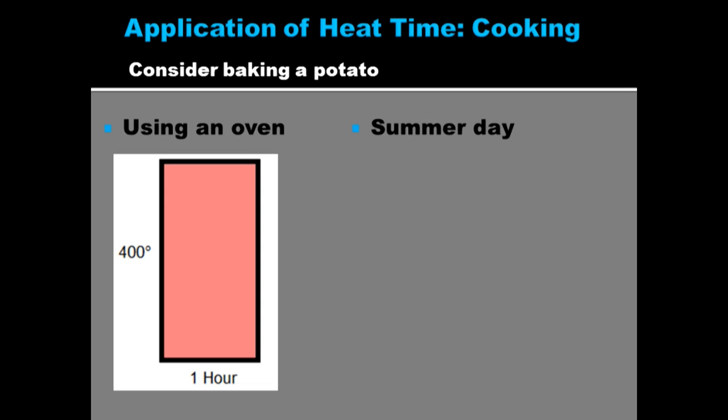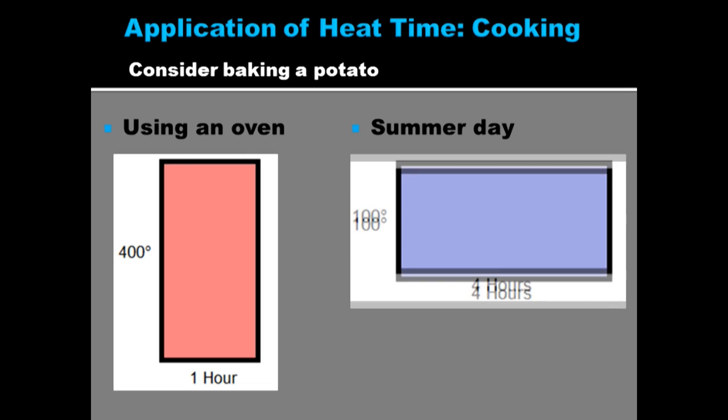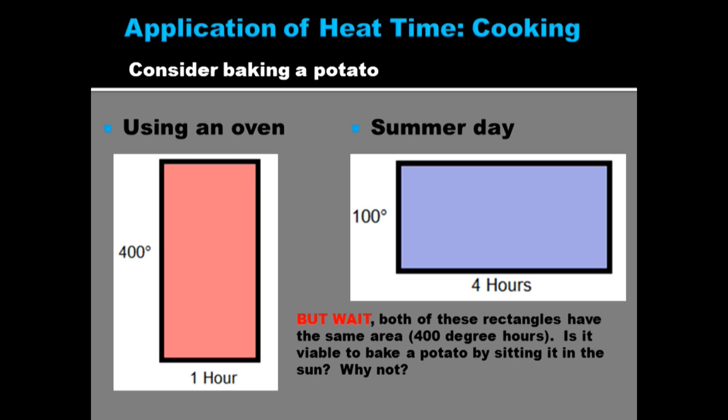But what if we tried it another way? What if we set the potato outside in the sun where it's 100 degrees for four hours? But wait a second, those graphs have the same area. Is that going to cook a baked potato sitting outside in the heat for four hours? Probably not. So why not?